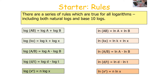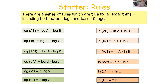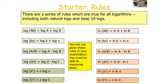The final law to be aware of is that log(X^N) equals N log X, and LN(X^N) equals N LN X. Essentially, when you have a power term in an equation, the power comes out as a multiplier in front of the log. Note that you are not given these rules in your examination — you must memorise them.